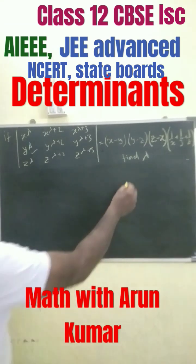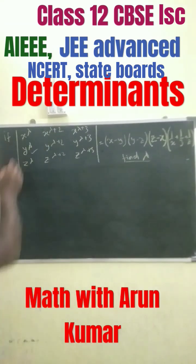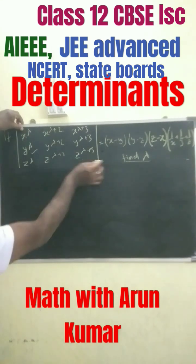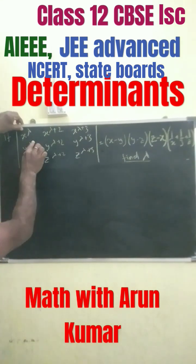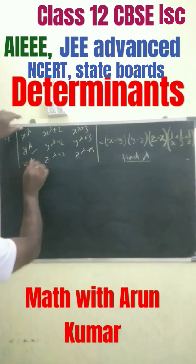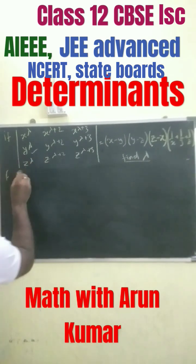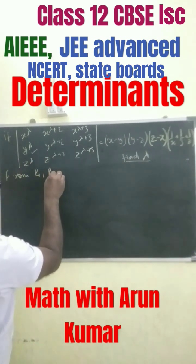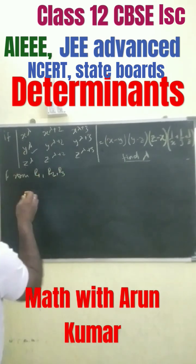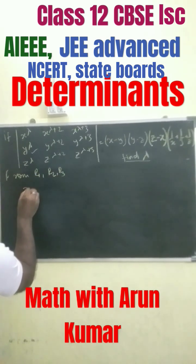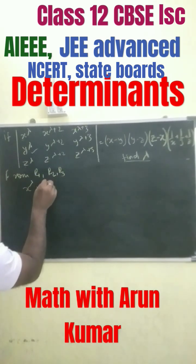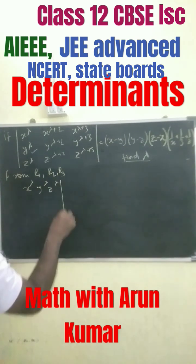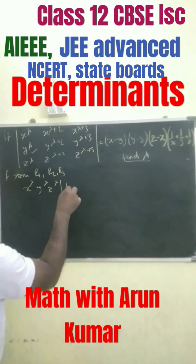From this question we have to find out lambda. From row 1 we can take x^λ common, from row 2 we take y^λ common, and from row 3 we take z^λ common. So we can straight away write here from r1, r2, and r3 we get x to the power of lambda, y to the power of lambda, and z to the power of lambda.